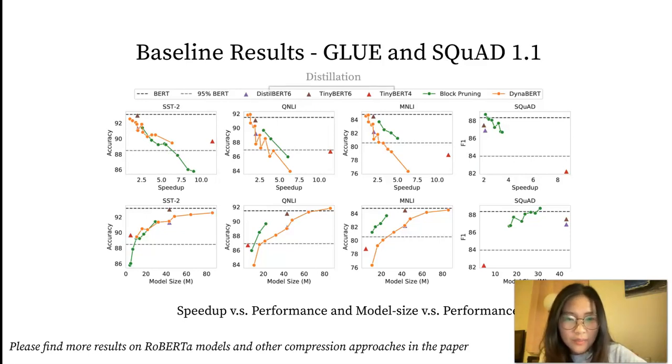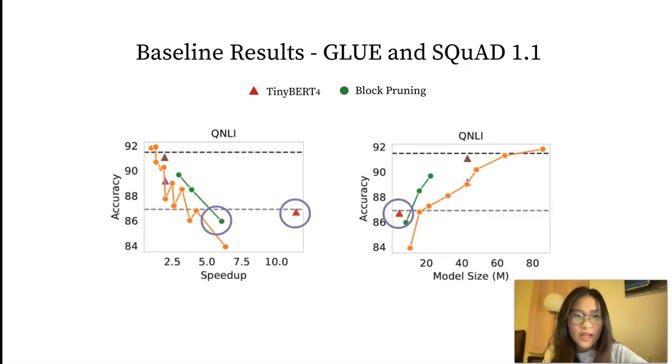If we take a close look at one of the datasets QNLI, the red triangle, which denotes the TinyBERT 4, and the green dot, which denotes the smallest model from block pruning. These two models have a similar model size, but TinyBERT 4, compressed through distillation, is twice as fast as the pruning model, and performs even slightly better.